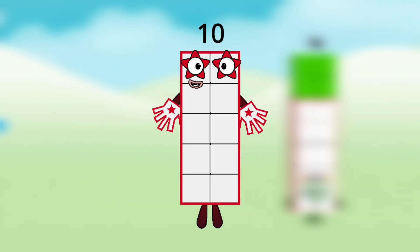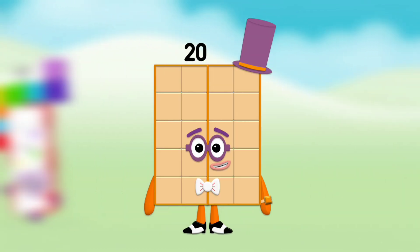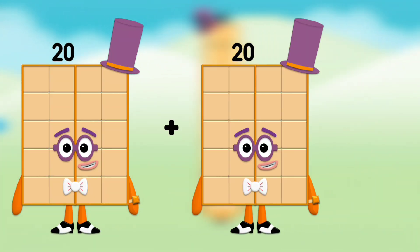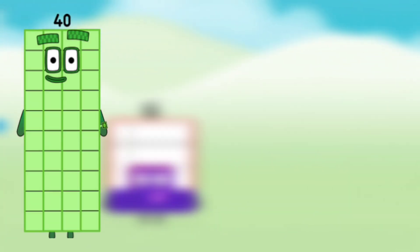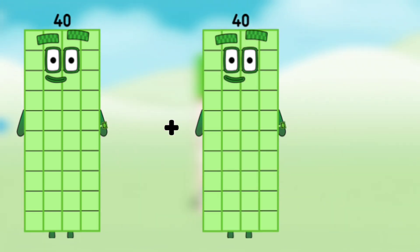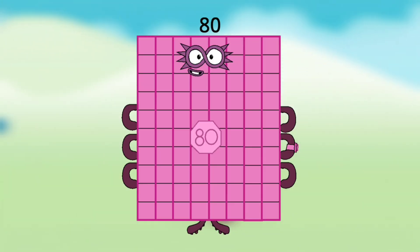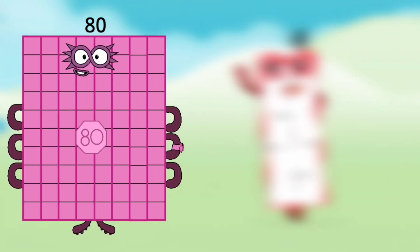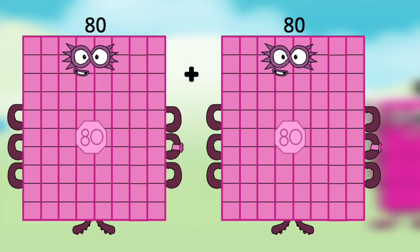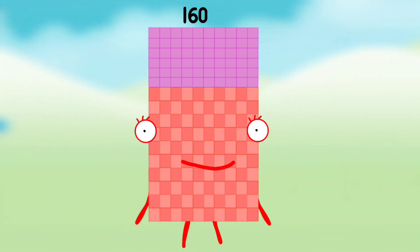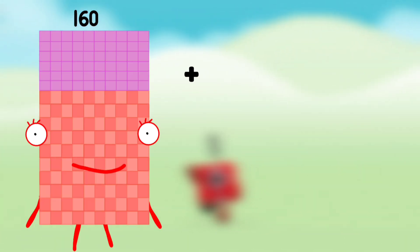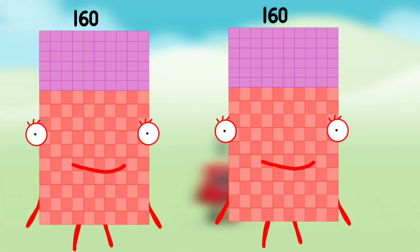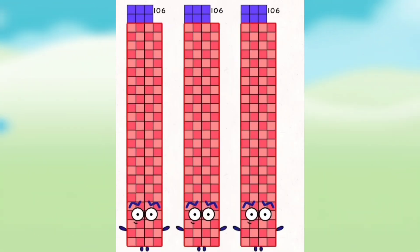Number Blocks 10 by 10. Number Blocks 10 plus Number Blocks 10 equals 20. Number Blocks 20 plus Number Blocks 20 equals Number Blocks 40. Number Blocks 40 plus Number Blocks 40 equals Number Blocks 80. Number Blocks 80 plus Number Blocks 80 equals 160, equals Number Blocks 160. Number Blocks 160 plus Number Blocks 160 equals Number Blocks 320.